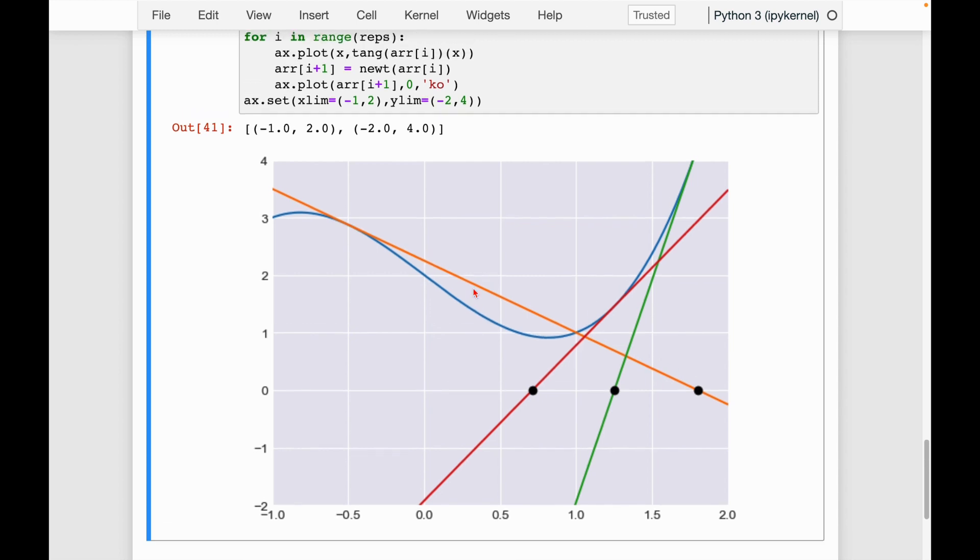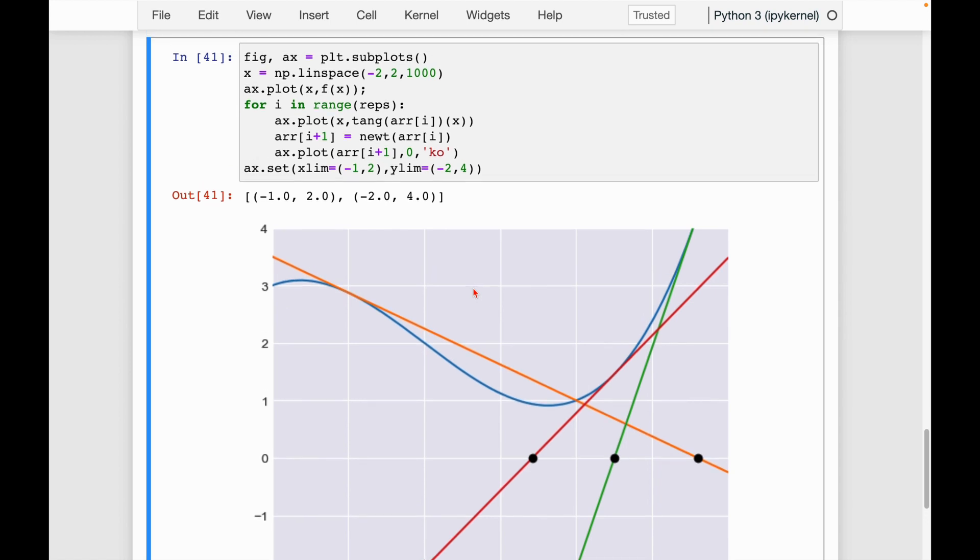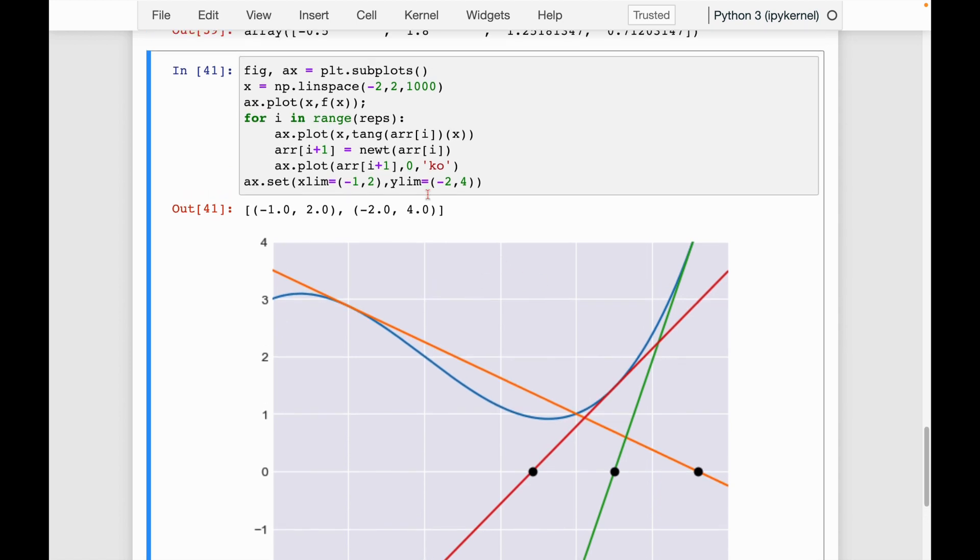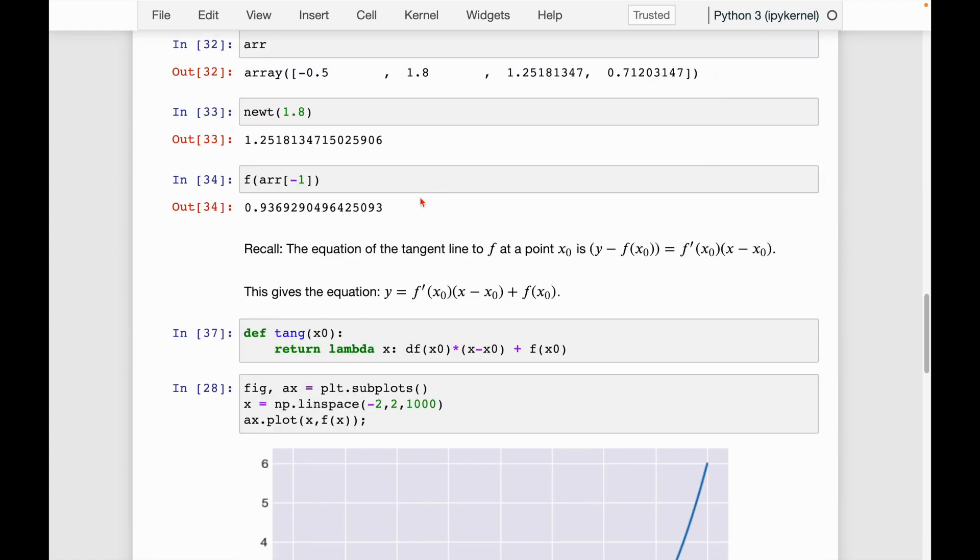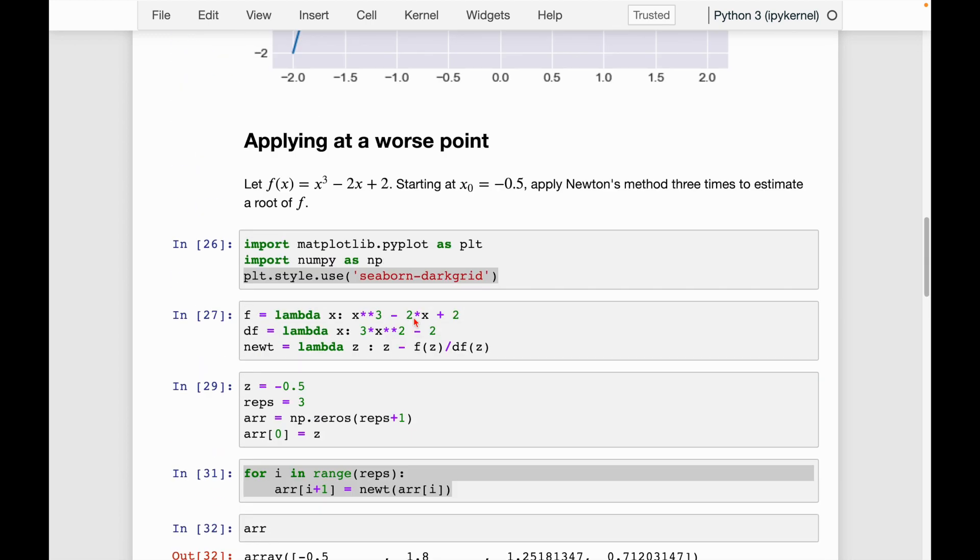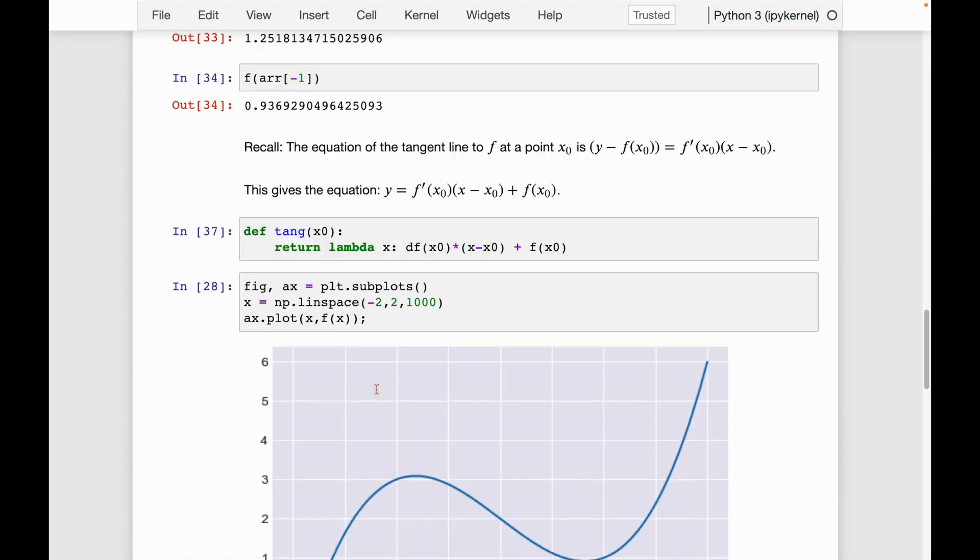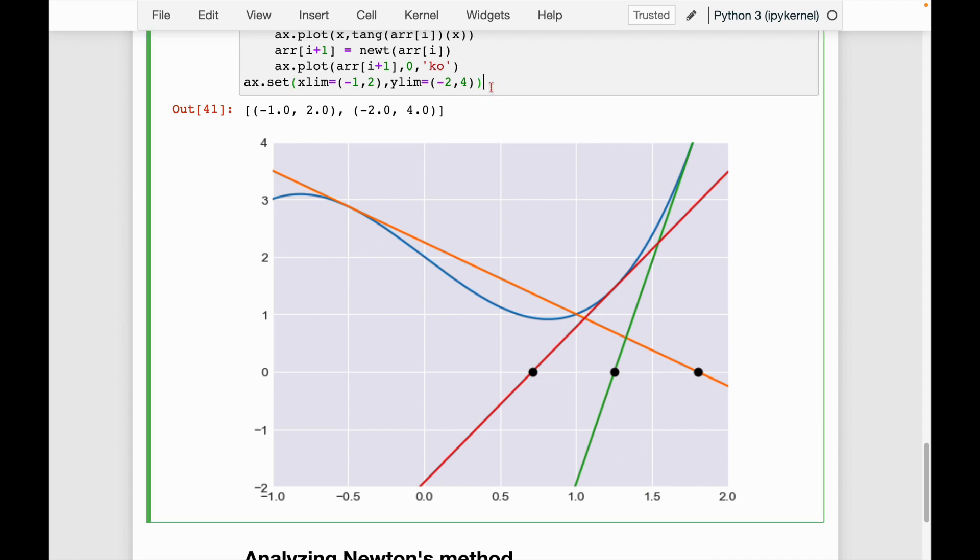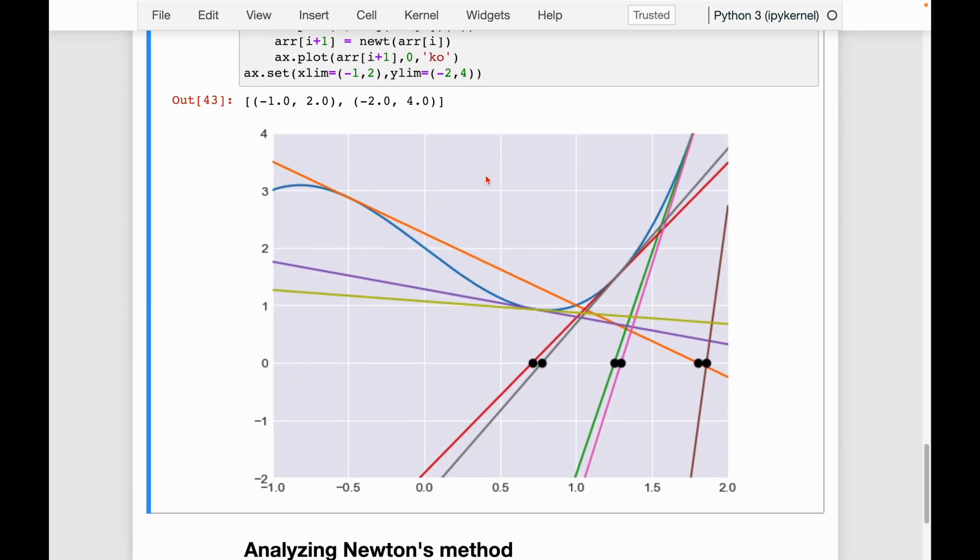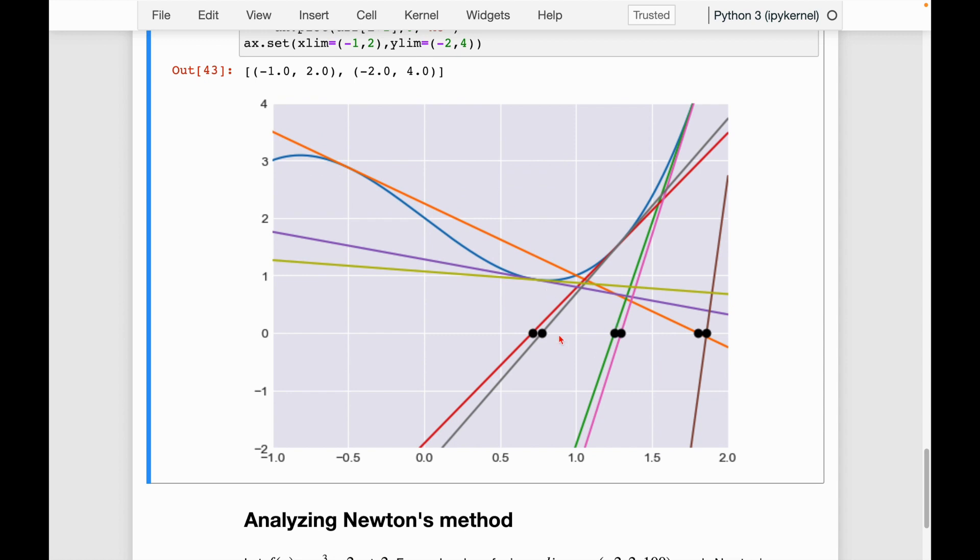So this is looking really good so far. What if now we wanted to change the number of reps? So what I'm going to do is I'm going to change the reps. Where did I define? All the way up here. I'm going to change the reps to 10. And I'll come back down here. And let's run it again. And we can see here, it's kind of going in between these points. It doesn't look like it's converging to zero at all.